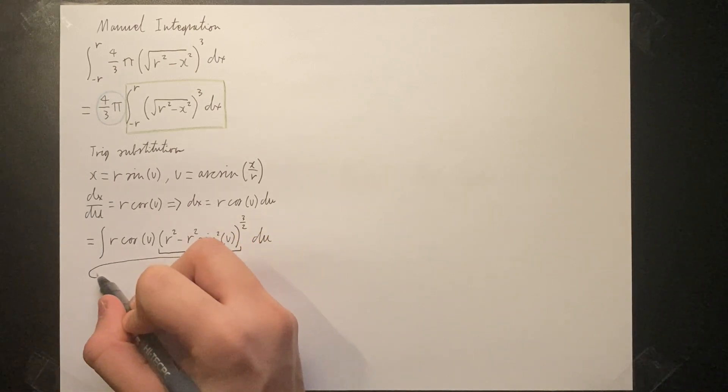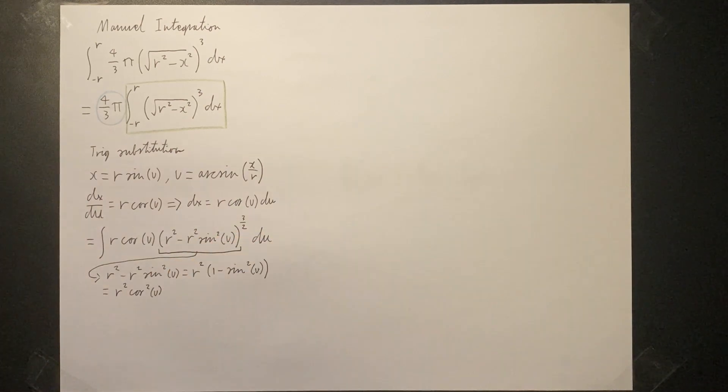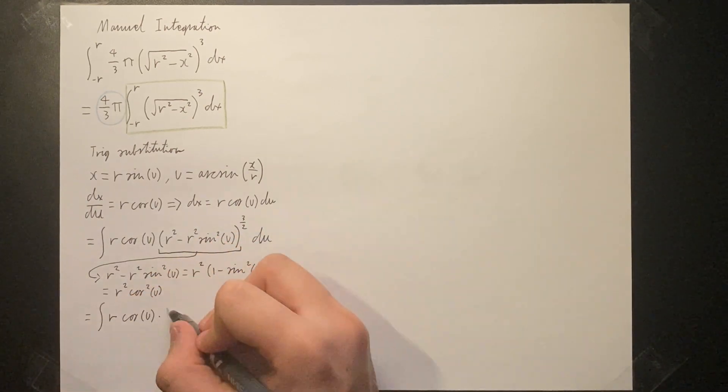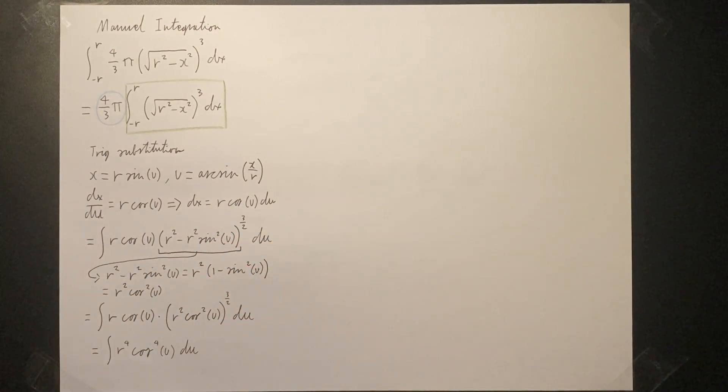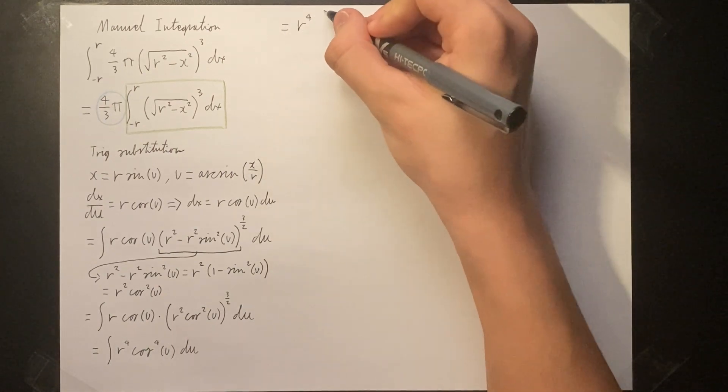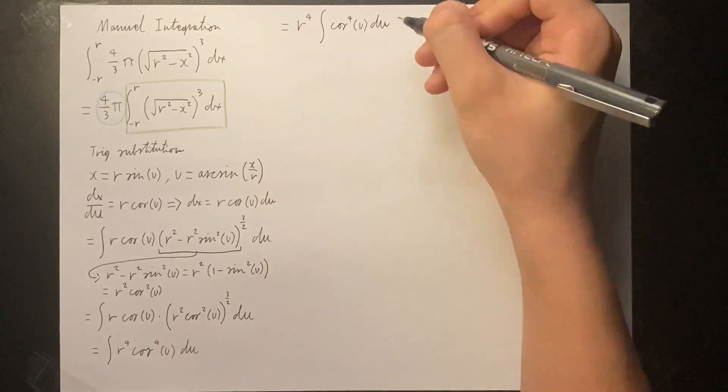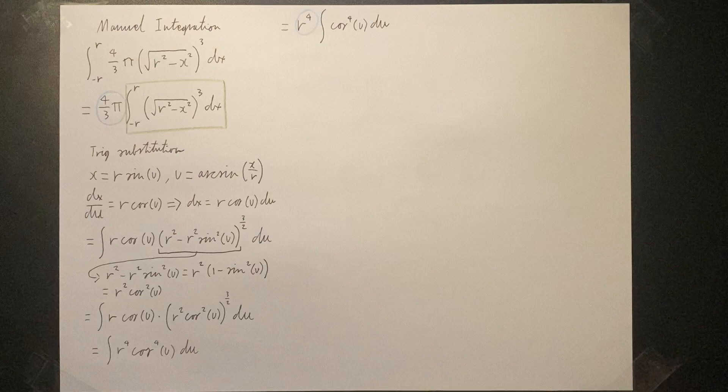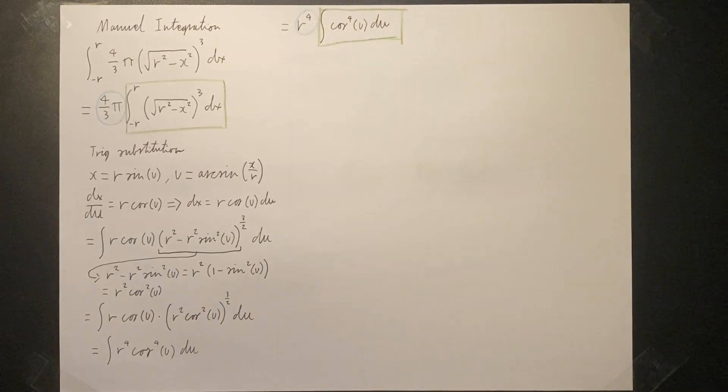R squared minus r squared times sine squared of u can be simplified to r squared cosine squared of u. Simplifying the powers gives us the integral of r to the fourth times cosine to the fourth of u. Again, r is a constant and can therefore be factored out from the integral. We will only deal with the integrand for now.